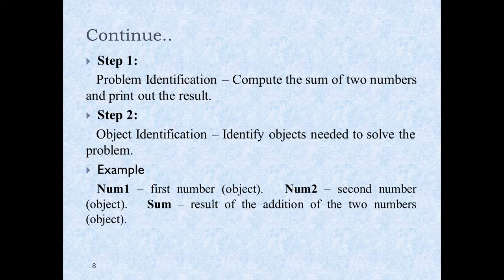Step two is object identification. Object one is num1, which holds value one. Object two is num2, which is the second object. And object three is sum, which is the result of the addition. So we have three objects: num1, num2, and sum.